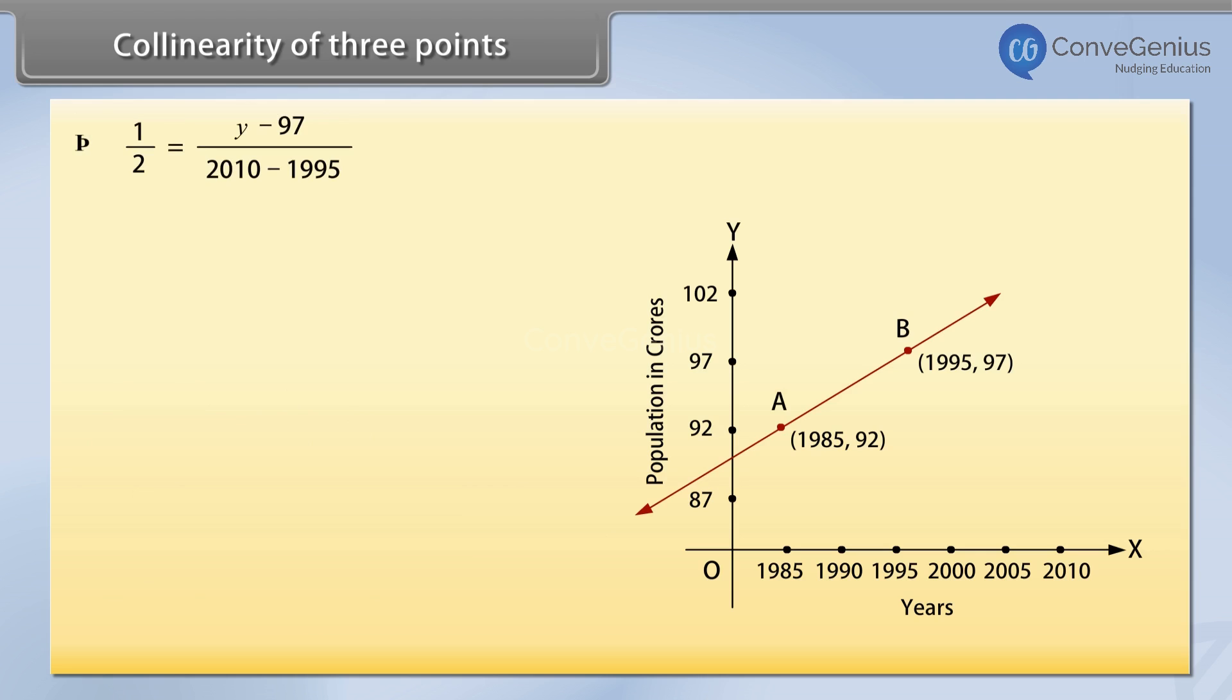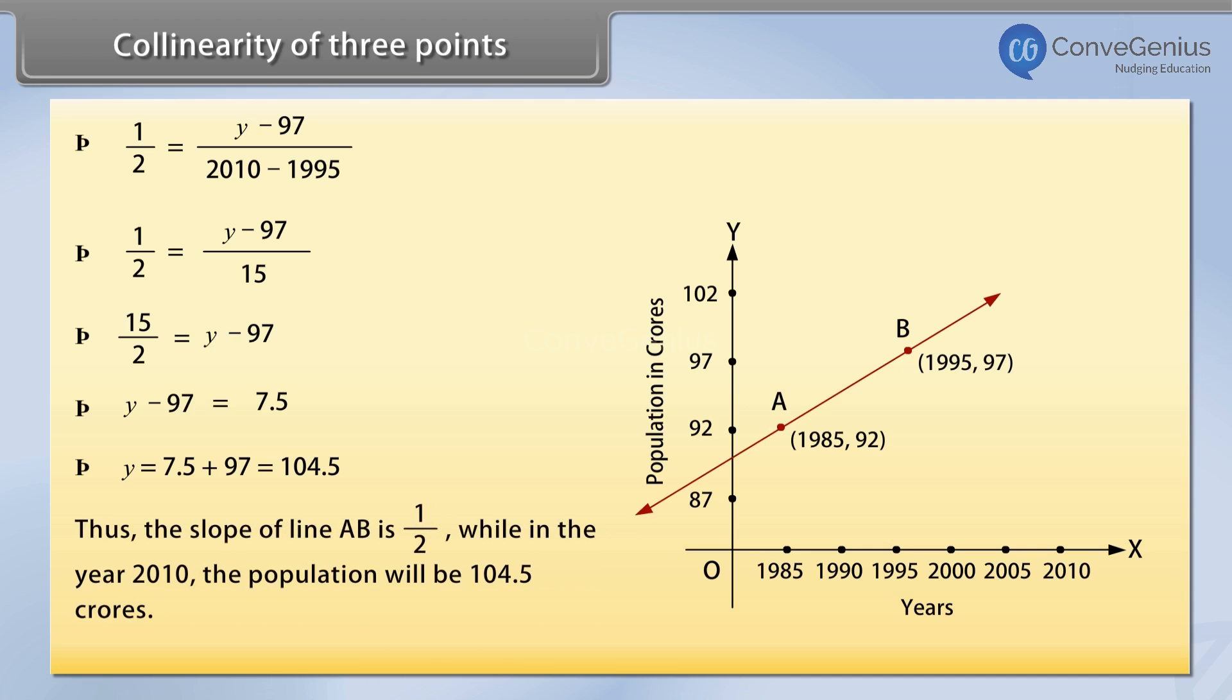On solving we get Y is equal to 104.5. Thus the slope of line AB is 1 by 2, while in the year 2010 the population will be 104.5 crores.